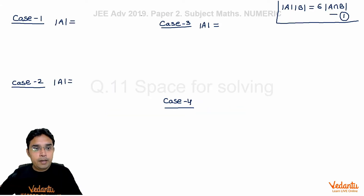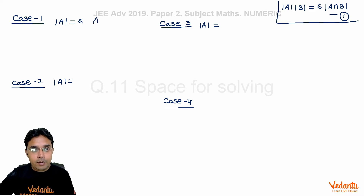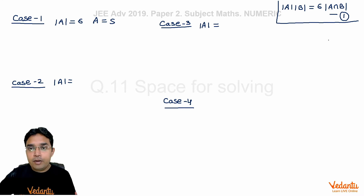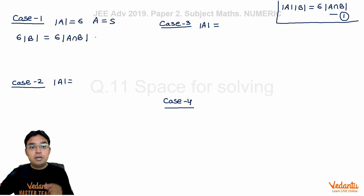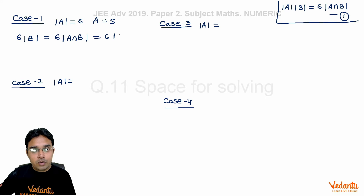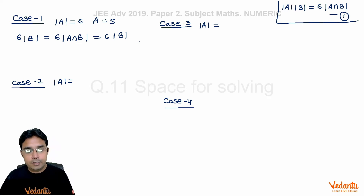Case 1: I take A to be the largest possible set, so |A| = 6, meaning A equals the entire sample space. If we check equation 1 in this case, the left-hand side becomes 6·|B| and the right-hand side becomes 6·|A ∩ B|. Since A is the sample space, A ∩ B = B, so the equation is automatically satisfied for all possibilities of B.